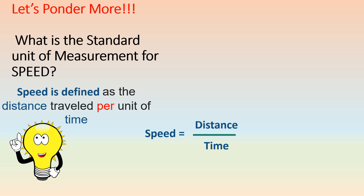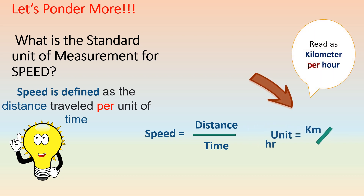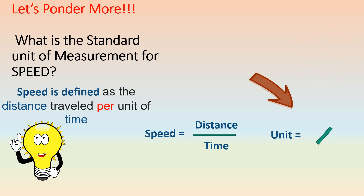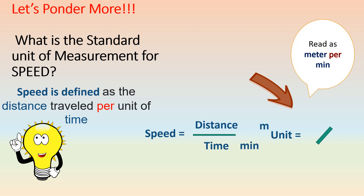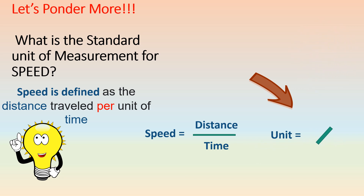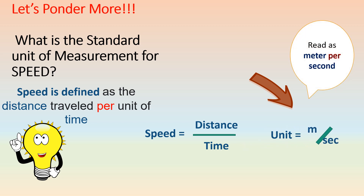Let's make an example. If the standard unit of measurement given to distance is kilometer and hour for time, the unit for speed will be kilometer per hour. What if the standard unit of measurement given to distance is meter and minute for time, the unit for speed will be meter per minute? Lastly, if the standard unit of measurement given to distance is meter and second for time, the unit for speed will be meter per second.